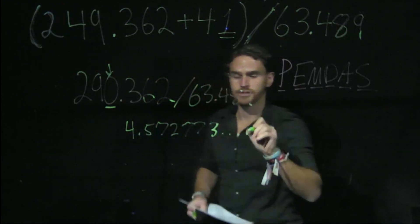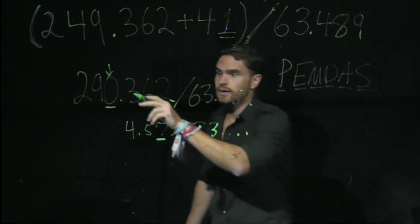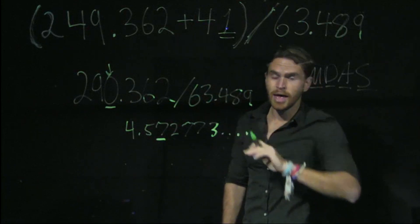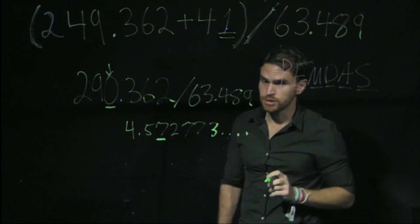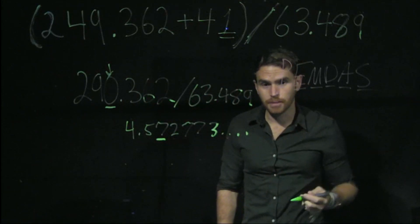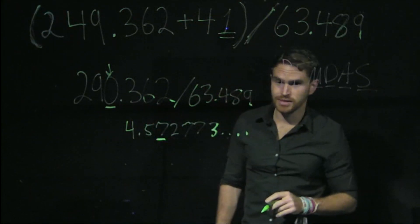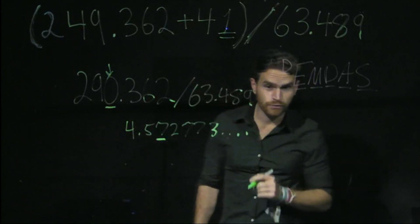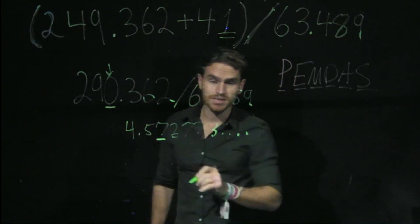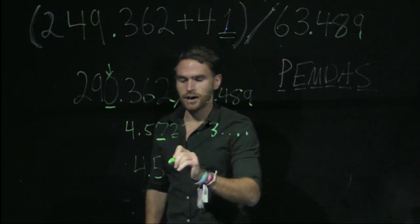The calculator gives 4.572773, and so on. I know that I can underline the third significant digit because I only had, in reality, a number with three significant digits divided by a number with five significant digits. The rule for multiplication and division differs from addition and subtraction — with multiplication and division, you keep the least number of significant digits overall, which is three from our numerator. So when I report my final value, I round to that digit, and because the next digit is 2, which is less than 5, I round down for a final overall answer of 4.57.